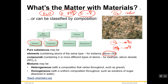Compounds are made up of two or more different types of atoms. For example, silicon dioxide — and we saw the example of water earlier. The composition of silicon dioxide is fixed: the percentage of silicon will be a certain value, the percentage of oxygen will be another value, and they'll add up to 100%. So that's the difference: elements contain one type of atom, while compounds contain two or more different types of atoms.